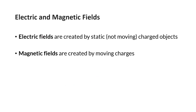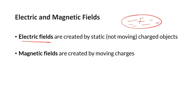Electrical fields - just a reminder - electrical fields are created by not-moving charged objects. So in our previous unit on electrostatics, if we had a sphere that had a lot of extra negative charges, it would have this field around it, and that would be an electric field. But the charge wouldn't be moving - there's no flow of electrons from one place to another. They're staying on that object. That's an electrical field created by a static charge.